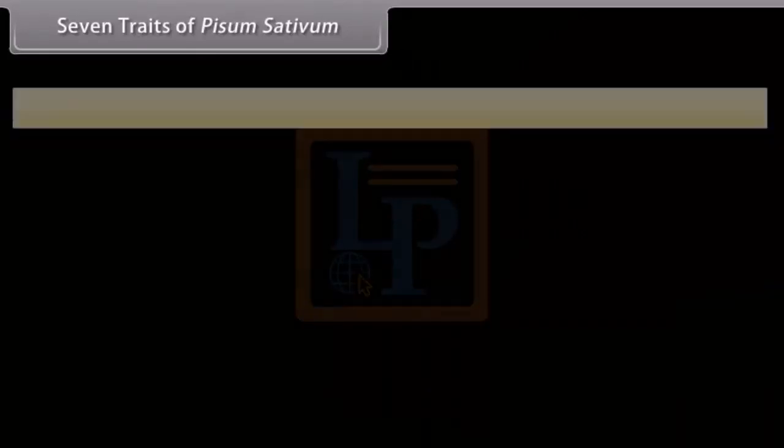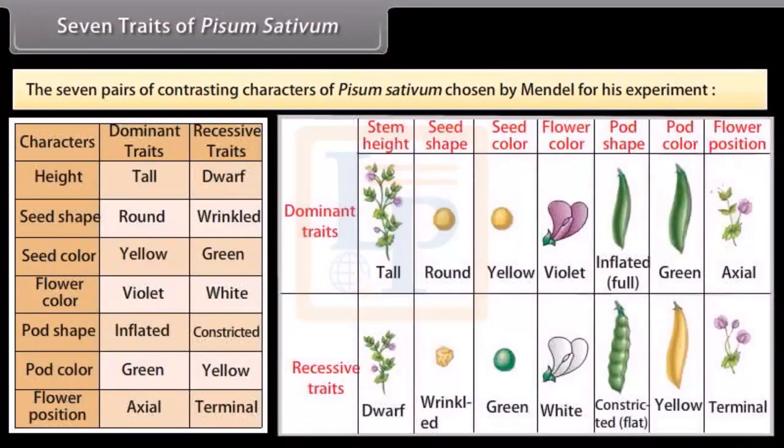Seven traits of Pisum sativum. The seven pairs of contrasting characters of Pisum sativum chosen by Mendel for his experiment.